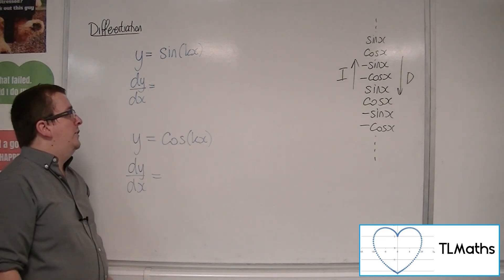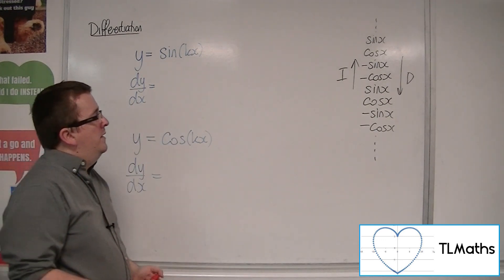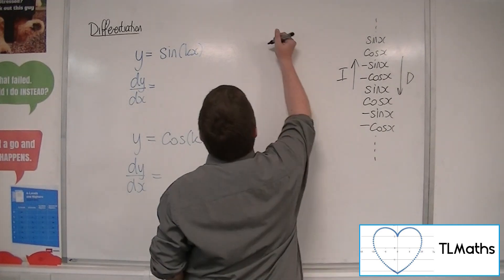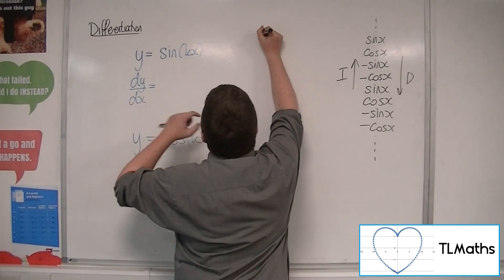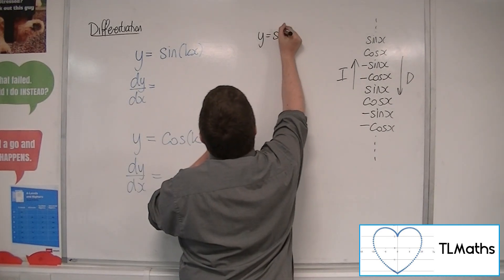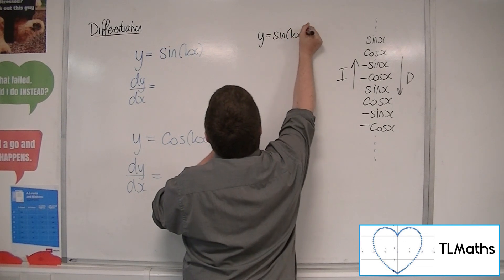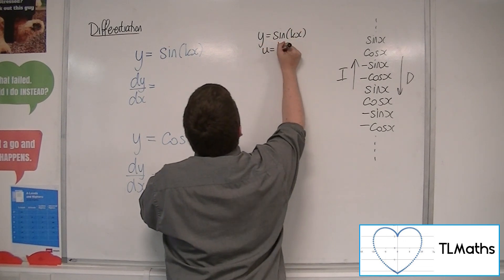Now, if I've got sine of kx and cosine of kx, then I can use the chain rule. So I could say y equals sine of kx. If I let u be kx, then y is equal to sine of u.